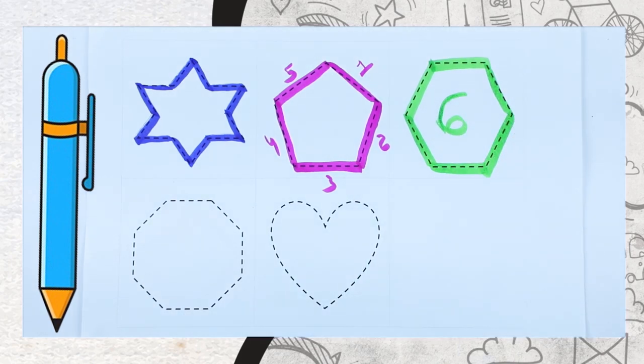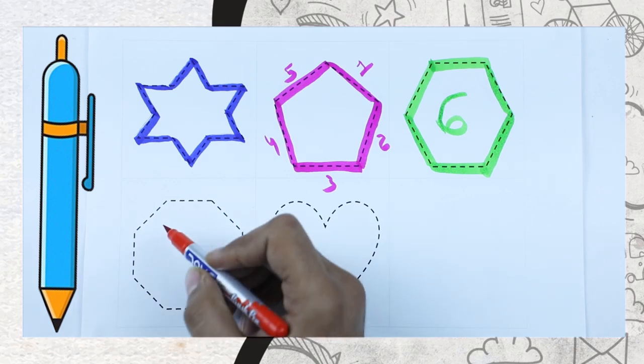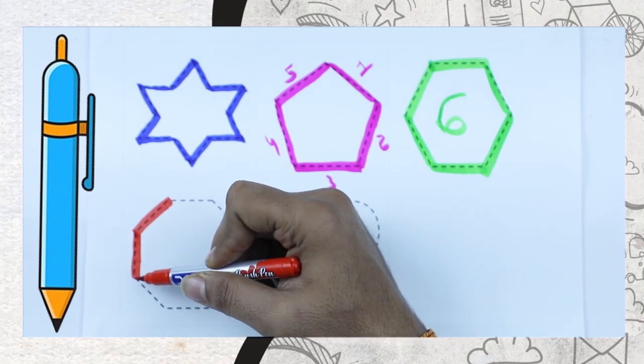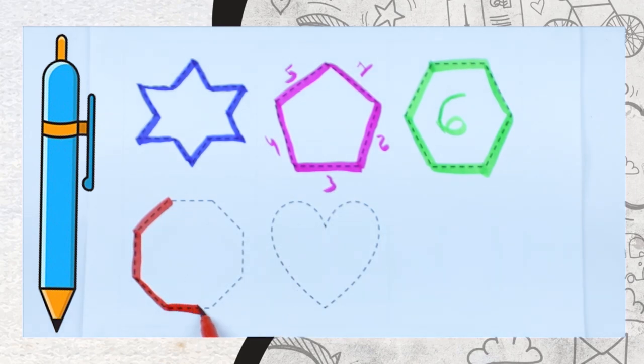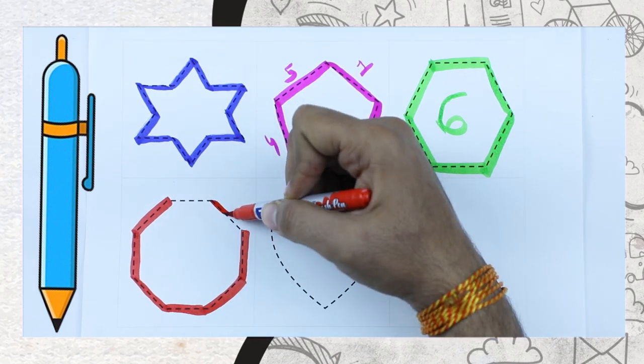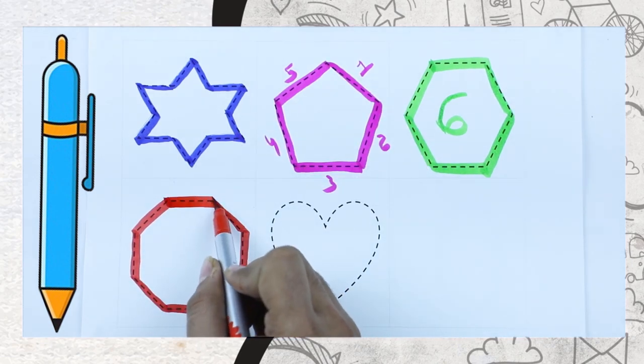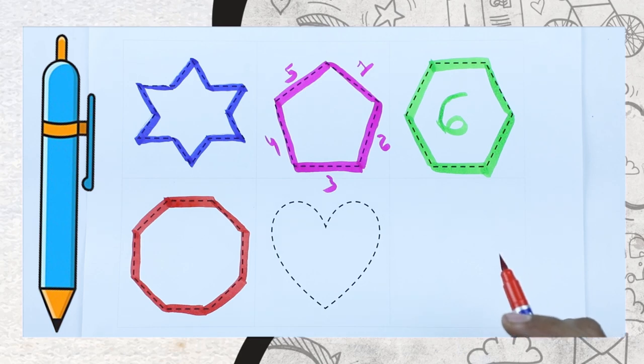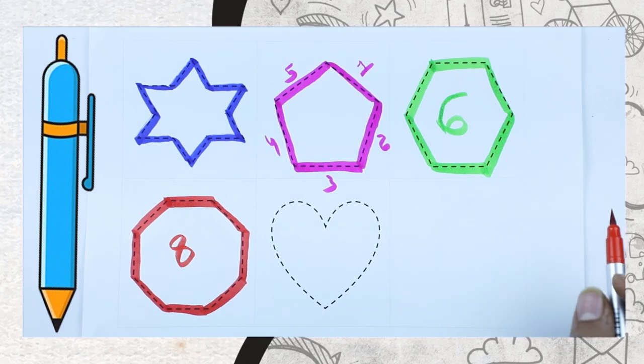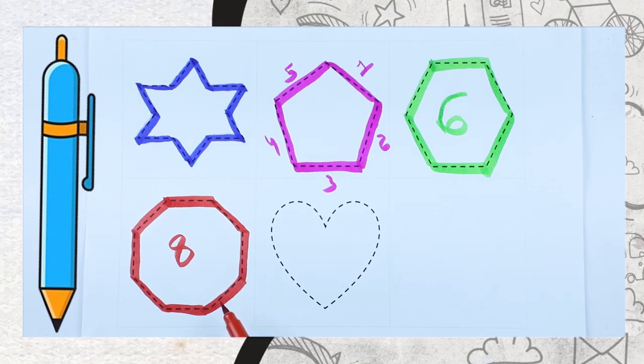Now we make heptagon. One, two, three, four, five, six, seven, eight. It's an octagon. Octagon has eight lines. Red color with octagon.